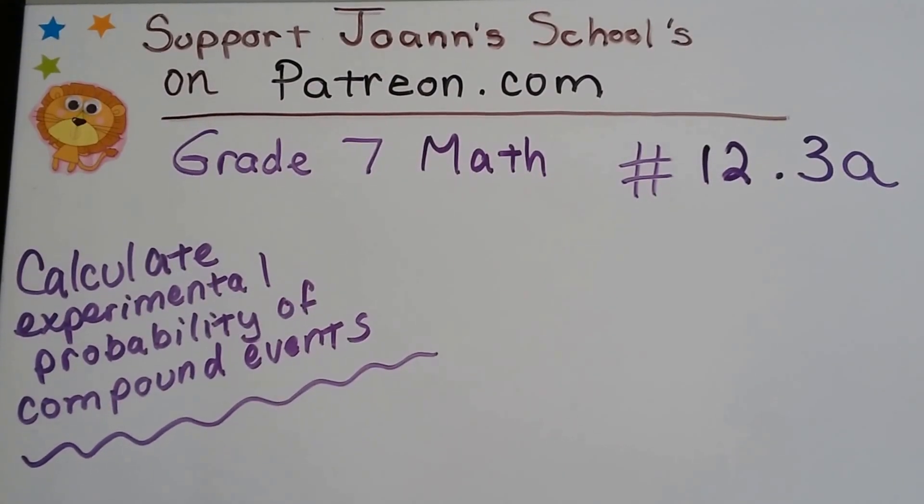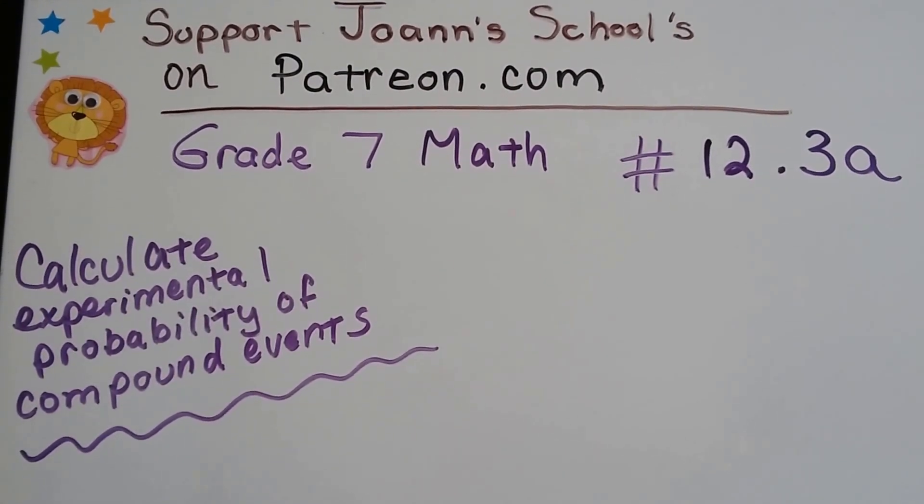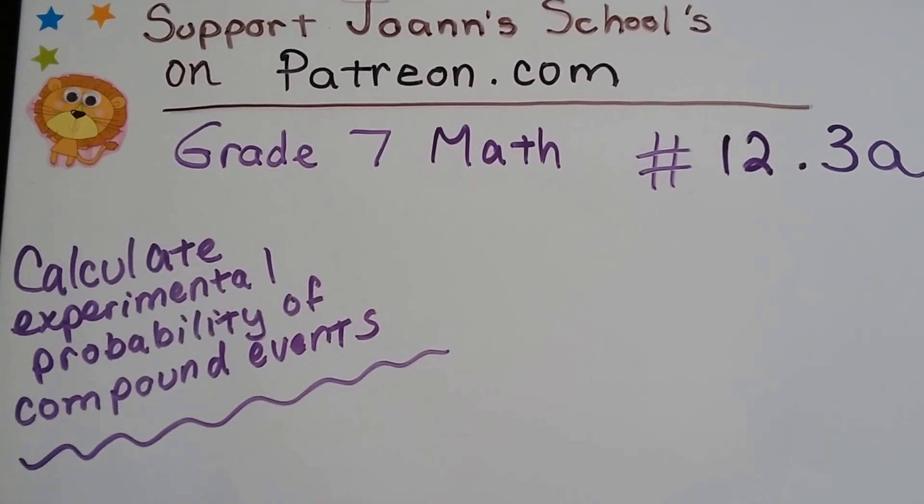Grade 7 math number 12.3a, calculate experimental probability of compound events.